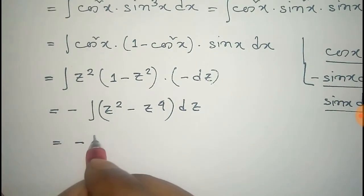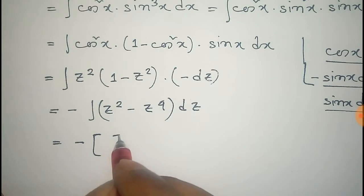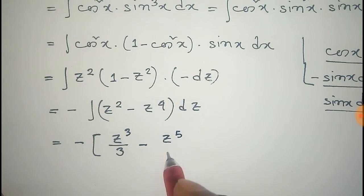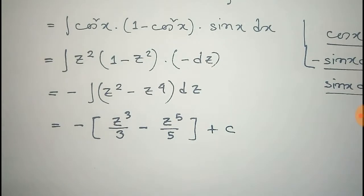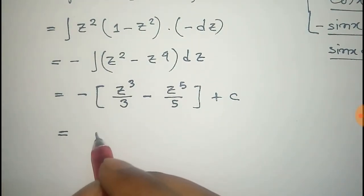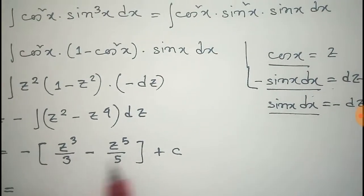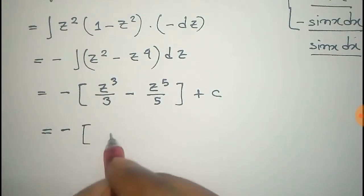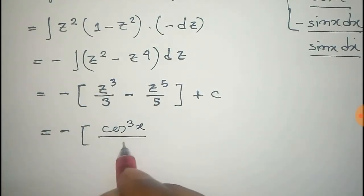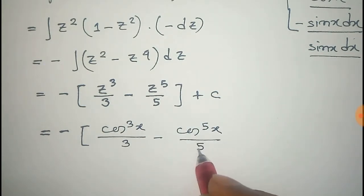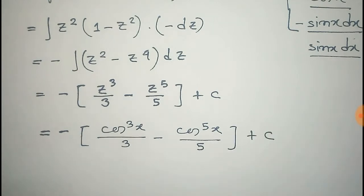Integrating, we get minus of z cube by 3 minus z to the power 5 by 5 plus constant c. Now substituting back the value of z as cosine x, we get minus cosine cube x divided by 3 minus cosine to the power 5 x divided by 5 plus constant c.